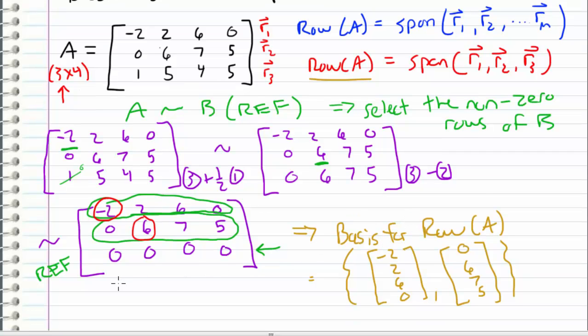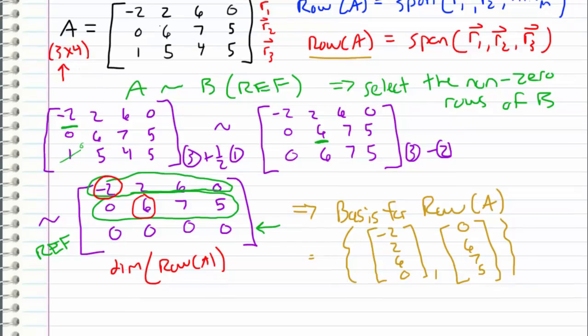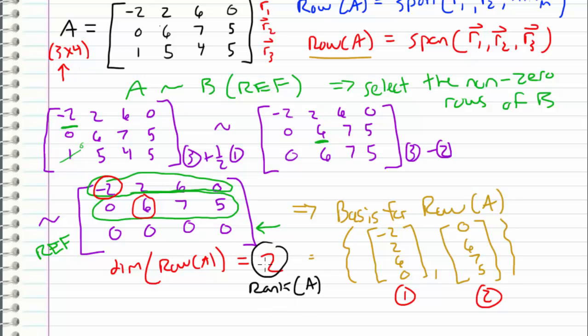Now the last thing that I want to say is that the dimension of the row space of A is equal to the number of vectors in our basis. So in this case, we have one, two vectors, therefore the dimension of our row space is equal to 2. The row space of the matrix in this example is two-dimensional, and we refer to this as the rank of a matrix. So in this example, the rank of this matrix A is 2, because there are two basis vectors, meaning that the dimension of our row space is 2.